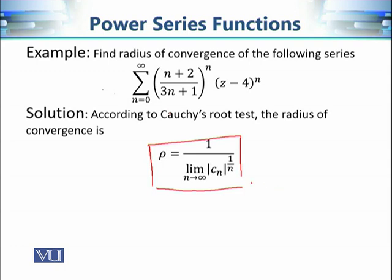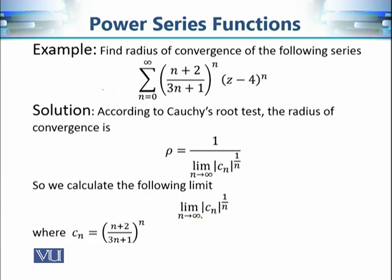If we try Cauchy's root test and the limit does not exist, we will leave this method and adopt Cauchy-Hadamard root test. But let's first try the simple approach. Using the value of Cₙ = (n+2)/(3n+1)ⁿ, we take the nth root, which cancels the exponent n, giving us (n+2)/(3n+1). The radius of convergence will be the reciprocal of this limit.